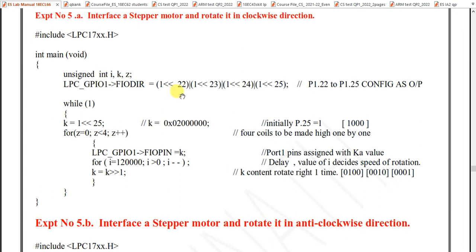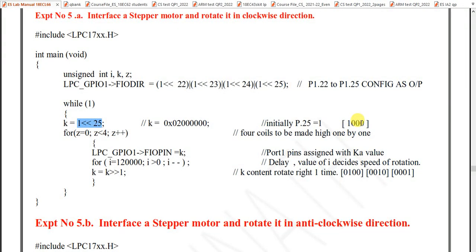Next, use while(1) for an infinite loop. Inside, set k = (1<<25), which makes exactly the 25th bit high in a 32-bit value — all other bits are zero. This means only pin 25 is high, and pins 24, 23, and 22 are zero. In the stepper motor, only one pin should be high at a time.